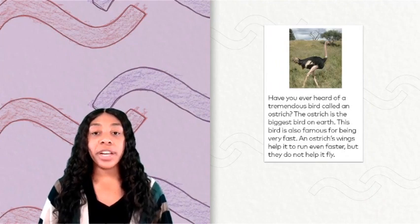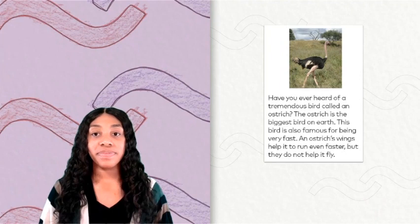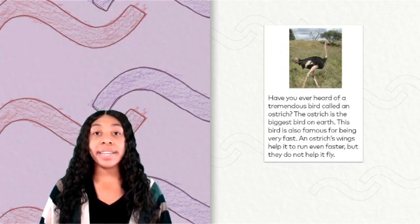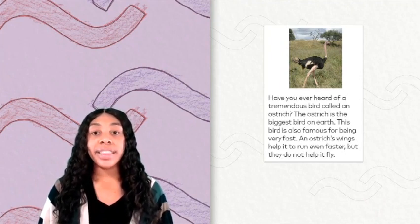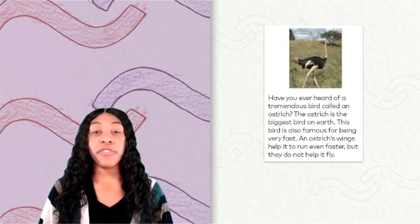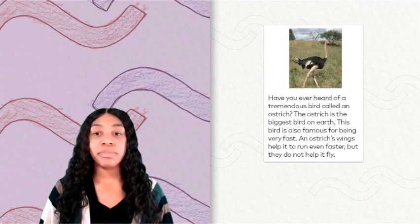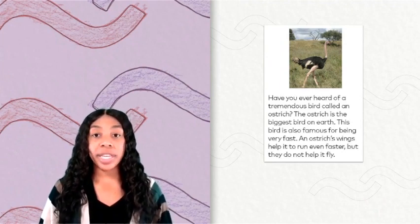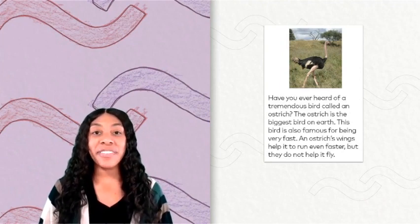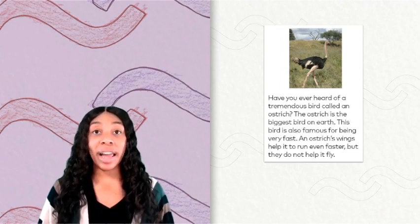Have you ever heard of a tremendous bird called an ostrich? The ostrich is the biggest bird on earth. This bird is also famous for being very fast. An ostrich's wings help it to run even faster, but they do not help it fly.